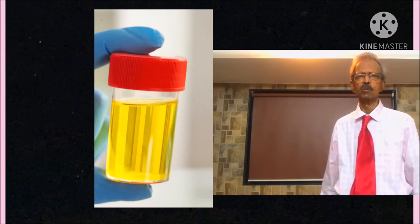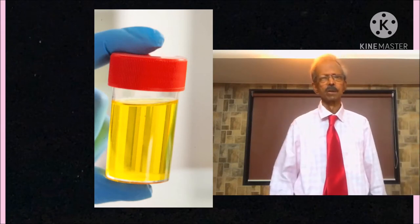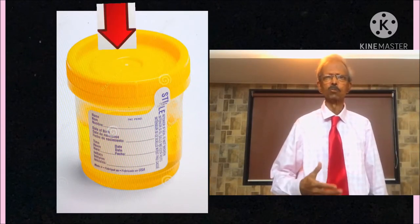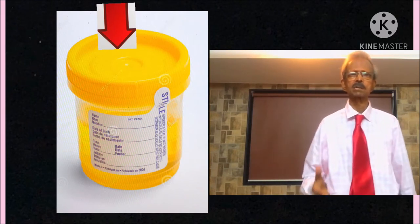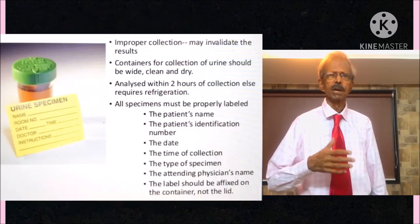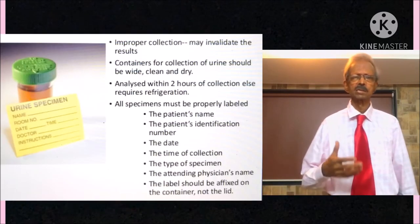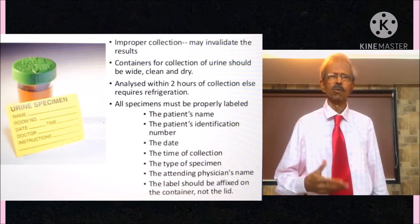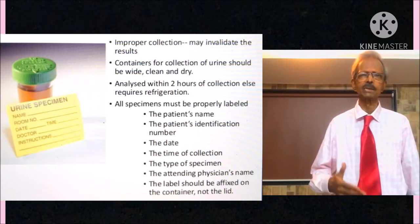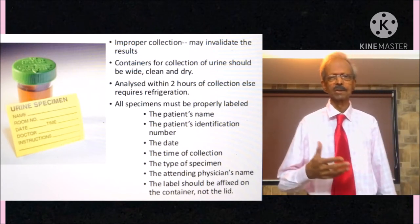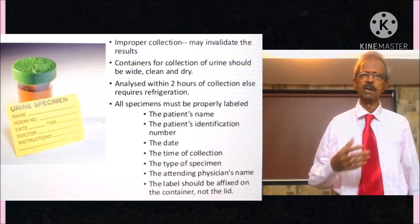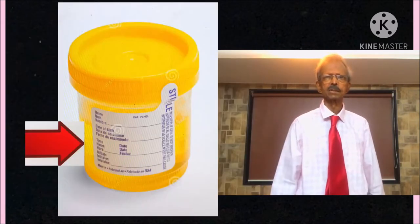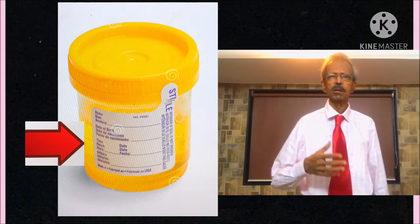Urine collection bottle should be of about 300-400 ml capacity. It should be clean and dry. Bottle should have wide mouth so that urine collection becomes easy. After receiving urine bottle from the patient, it should be labelled immediately with name of the patient, patient identification number, date and time of collection, type of collection. In this case, it is fasting. The physician's name also should be written and the label should be affixed to the side of the bottle and never on the lid.